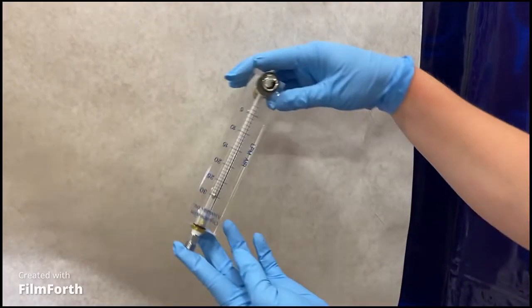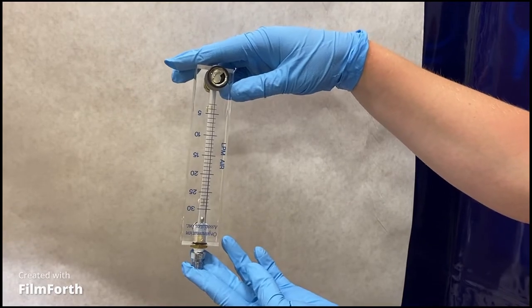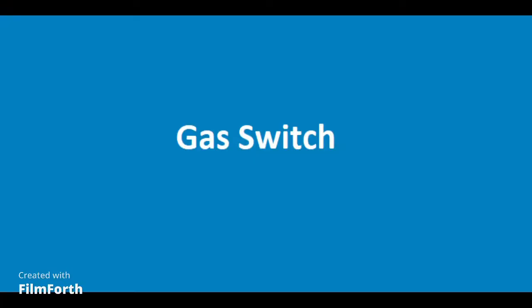To do this, disconnect the flow meter from the instrument and flip it upside down. If the ball does not move, the flow meter needs to be replaced.